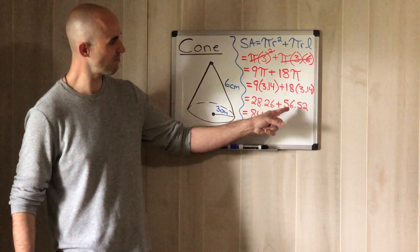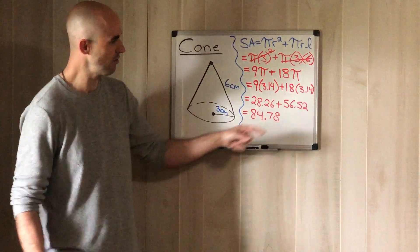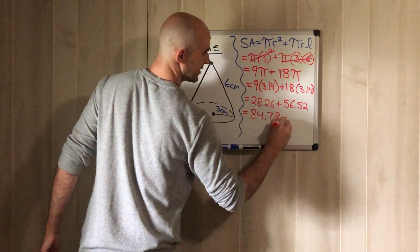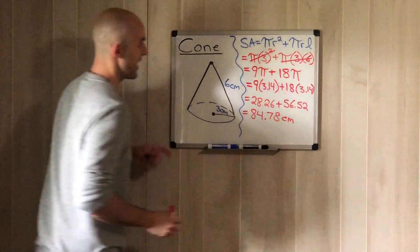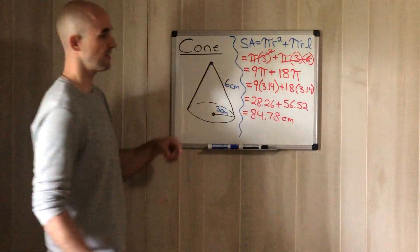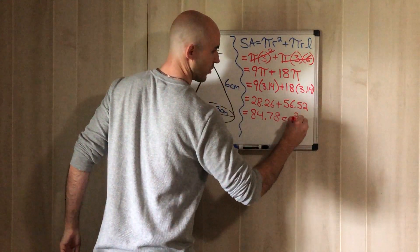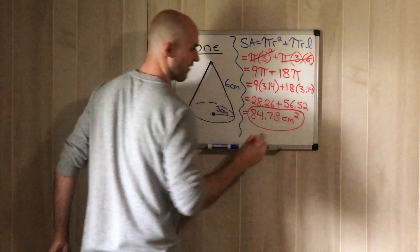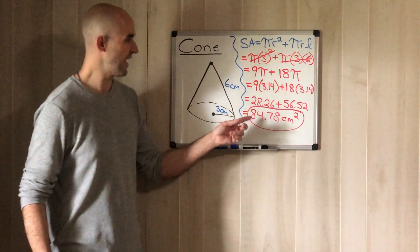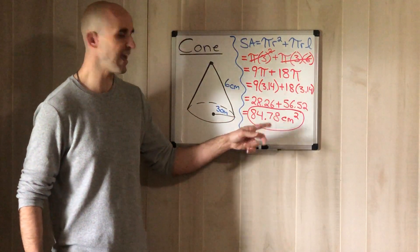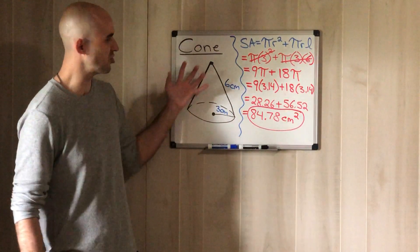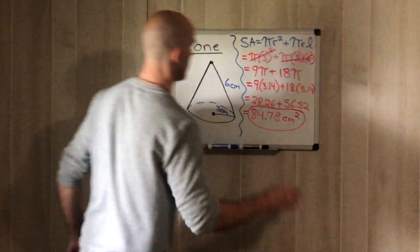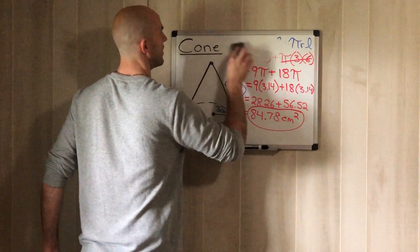Since we're working in centimeters and dealing with surface area, our units are squared — so the answer is 84.78 cm². That's how much surface area is on that cone. Very simple, very direct. Let's try another example to make sure you have a good understanding.